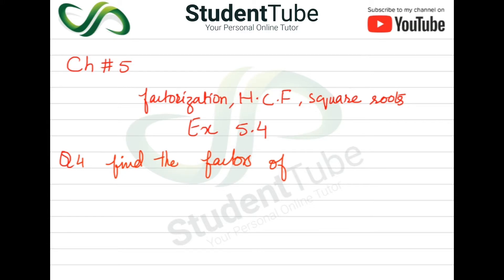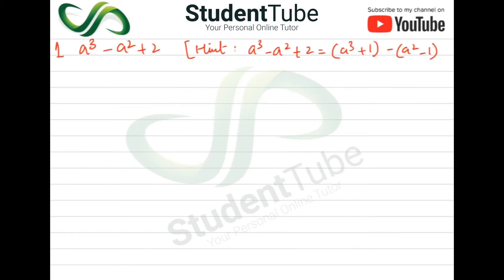Question 4. Find the factors of question 4, part 1: a³ minus a² plus 2.